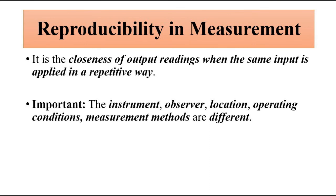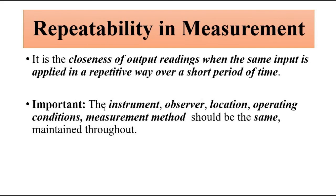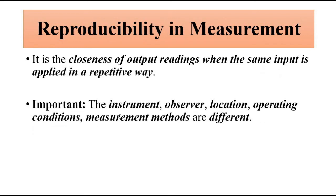So in summary, repeatability and reproducibility both mean closeness of multiple output readings when a particular fixed input is applied to a system. But in repeatability, the same instrument, method, observer, location, and operating conditions are used. In reproducibility, different instruments, methods, observers, locations, and operating conditions are used. That is what separates repeatability from reproducibility. This is an important concept related to the measurement system.